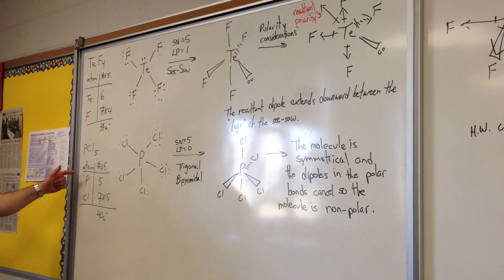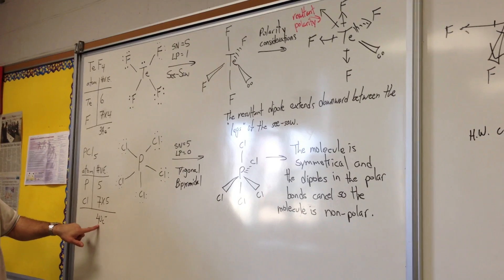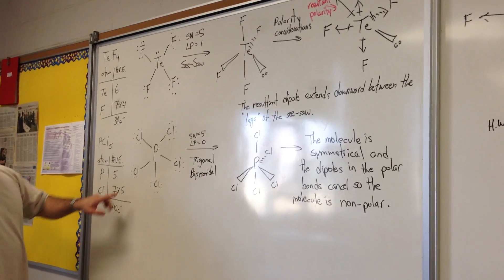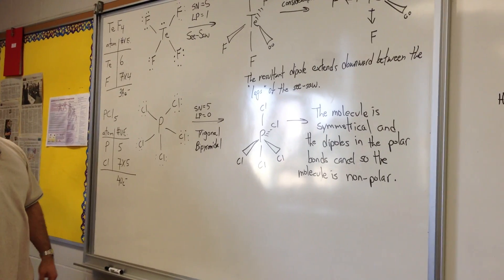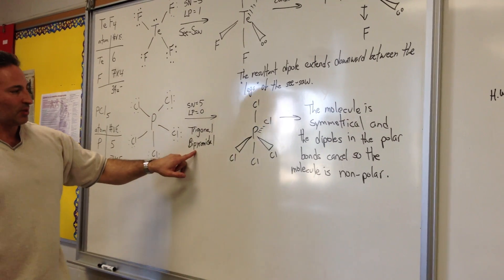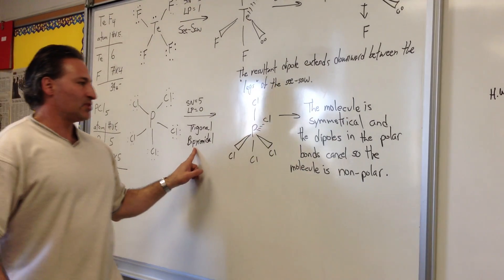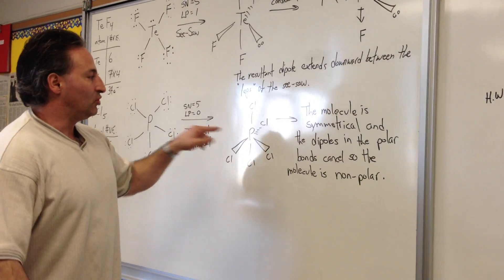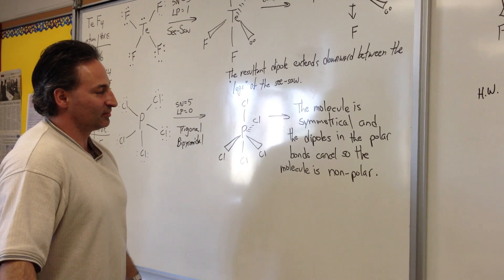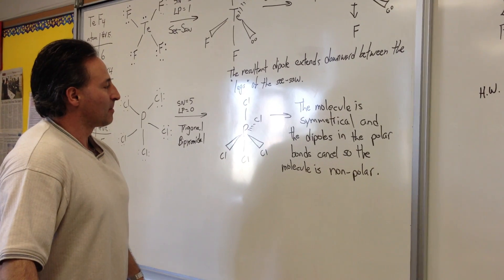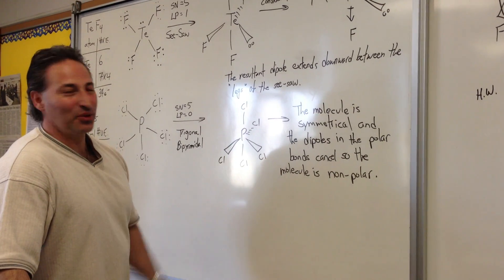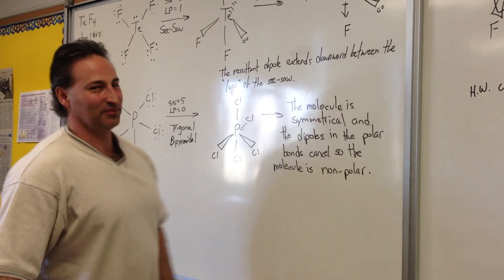Finally, PCl₅ has a total of 40 electrons, no lone pairs, and a steric number of five, giving a trigonal bipyramidal geometry. Due to the molecule's symmetry, the dipoles cancel out and the molecule is non-polar.